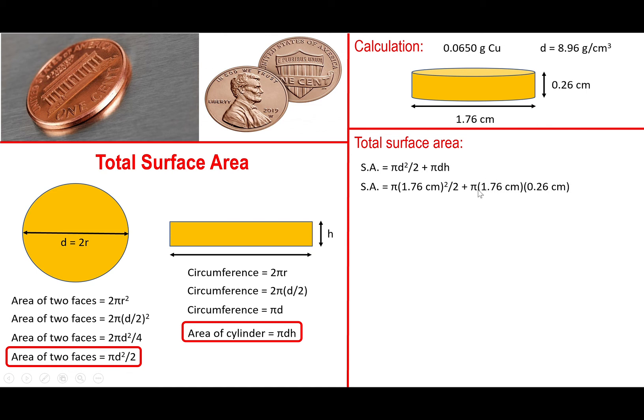And to that, we add πdh. So for the diameter, we have 1.76. The height, we have 0.26 centimeters. And at this point, you carry on the multiplication for each segment. And at the end, you add them together. And you should end up finding out that the surface area here is 2.0064π. Or in other words, 6.303 cm². So that's basically multiplying π by 2.0064.